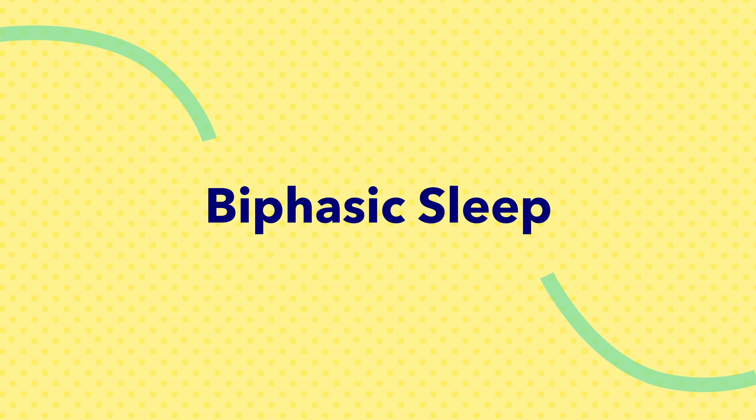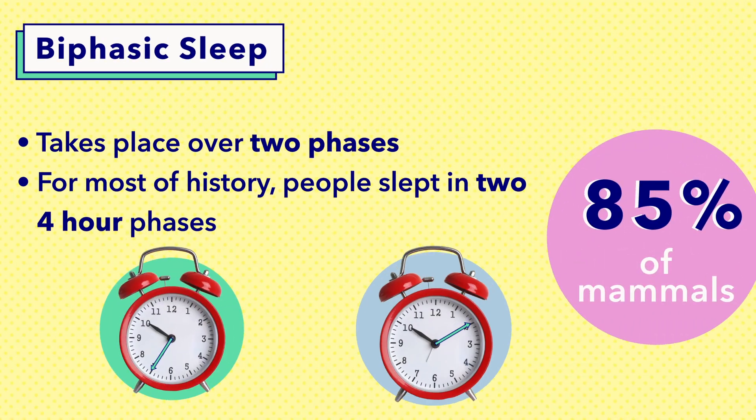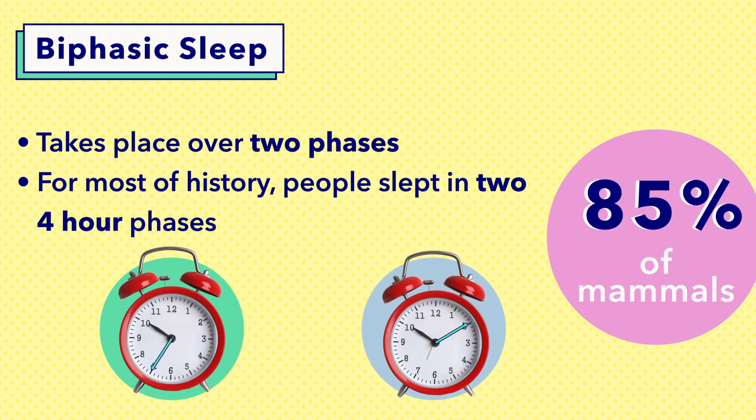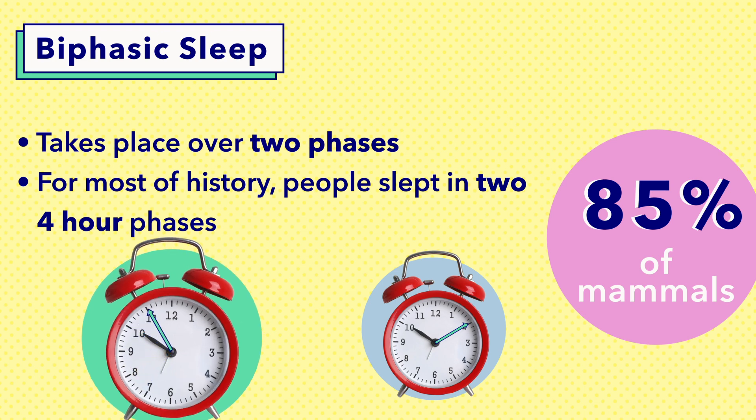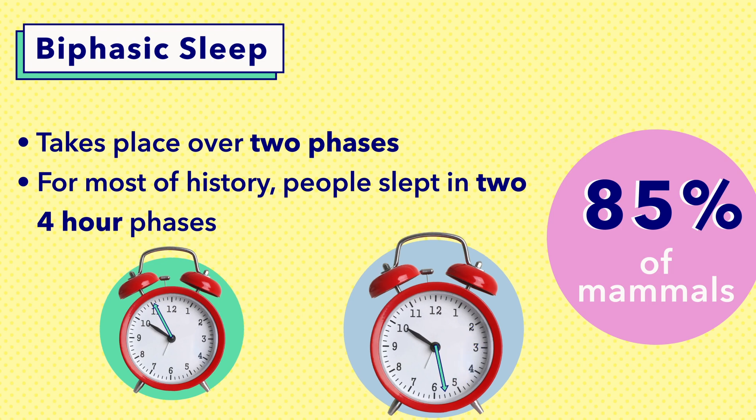Now let's talk about biphasic sleep and how it's different from monophasic sleep. Biphasic means two phases. 85% of mammals sleep in two or more phases rather than a single period. For most of recorded history, people slept in two four-hour phases — one that started just after dusk and another that started later at night. Sleep maintenance insomnia, which is repeated waking during the night, may be related to the biological tendency to sleep in phases.